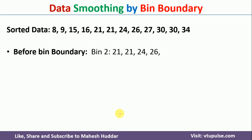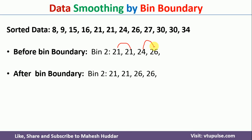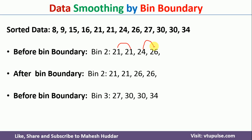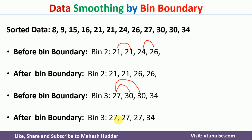For bin 2, which contains 21, 21, 24, 26: 21 is nearest to 21, and 24 is nearer to 26. So it becomes 21, 21, 26, 26. For the last bin, which contains 27, 30, 30, and 34: 30 is nearer to 27, so it becomes 27, 27, and 34 remains 34. So the last bin after applying the bin boundary is 27, 30, 30, and 34.